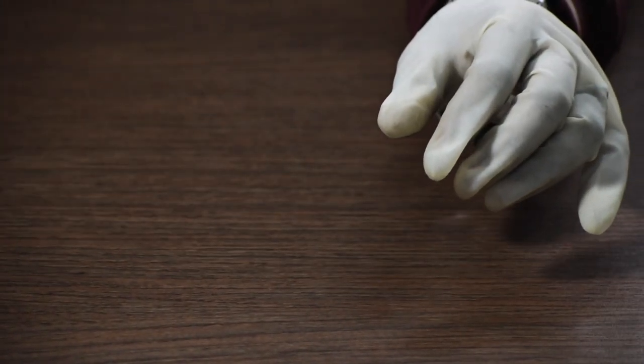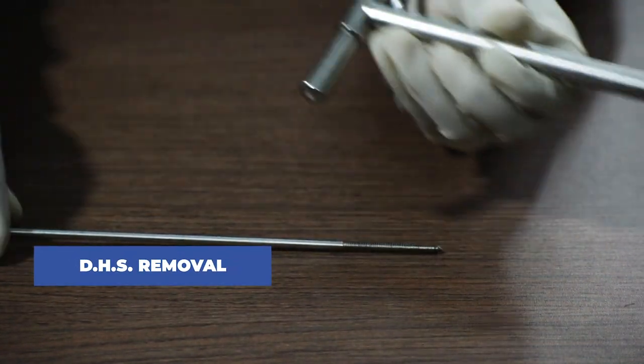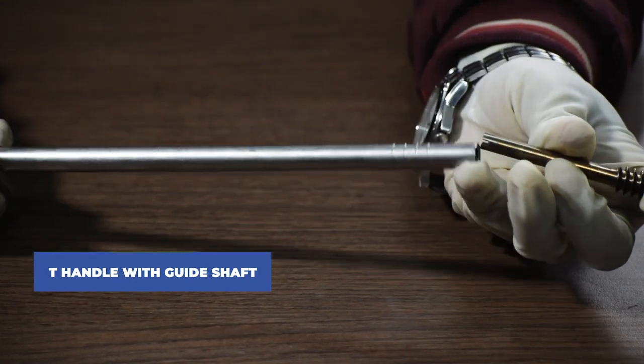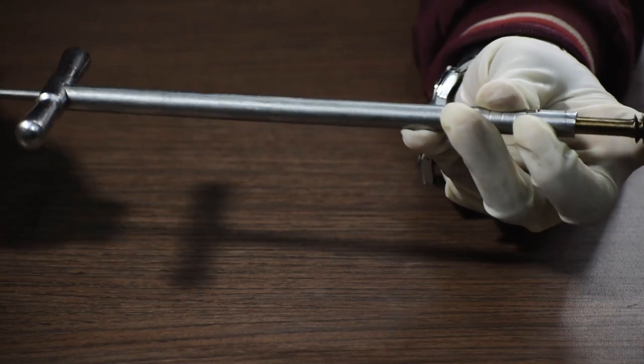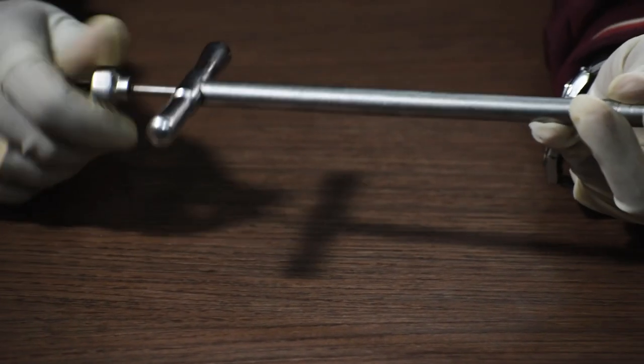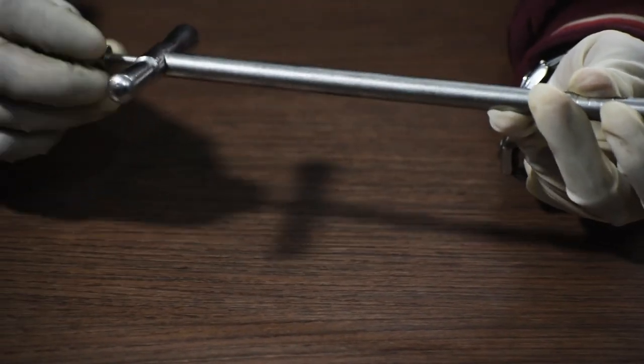Now, that was a part for the plate fixation. Now coming to the DHS plate removal, in case there are complications in the patient, we are going to use a T-handle with guide shaft to lock the lag screw and preventing it from further movement. Once locked, the removal procedure starts.